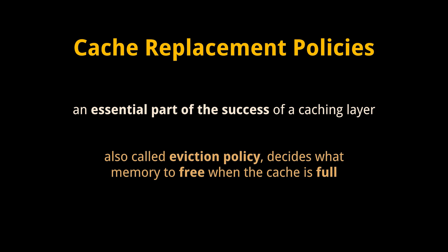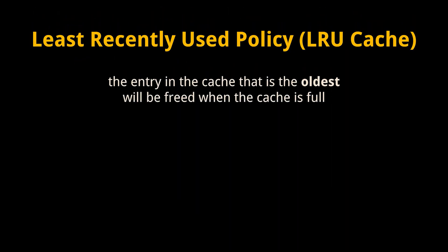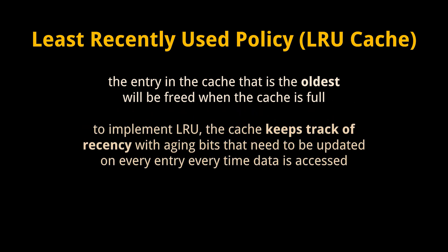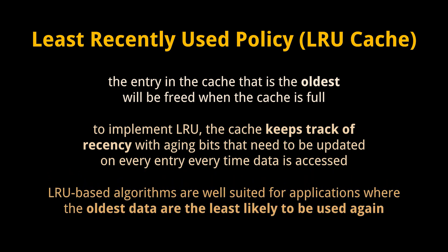Now let's look at cache replacement policies. The replacement policy — also called eviction policy — decides what memory to free when the cache is full. First is the LRU (Least Recently Used) policy, where the oldest entry in the cache will be freed when it's full. LRU performs well and is simple to understand, making it a good default choice. To implement LRU, the cache keeps track of recency with aging bits updated on every access. Although LRU makes efficient decisions, the computational overhead of tracking aging bits leads to approximations. LRU-based algorithms are well suited for applications where the oldest data is the least likely to be used again.